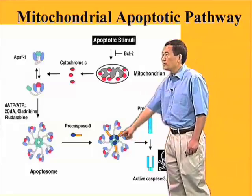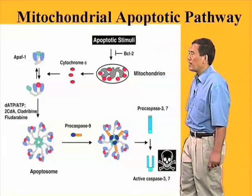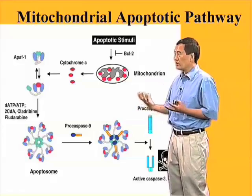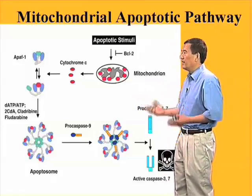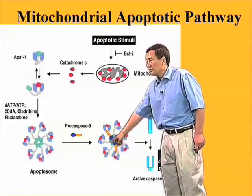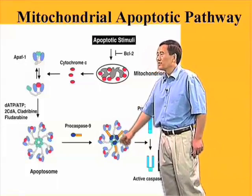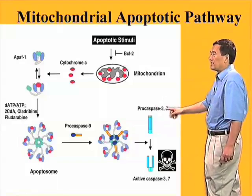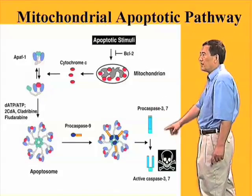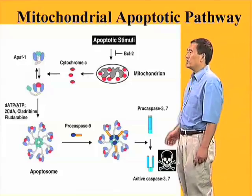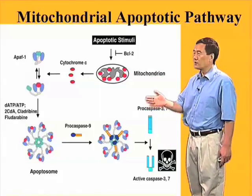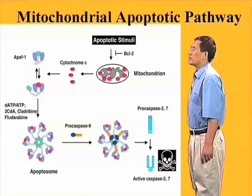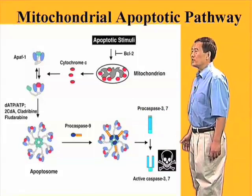Once procaspase-9 gets recruited to the apoptosome, it undergoes an auto-activation process, the molecular detail of which we still do not fully understand. But as a result, the caspase-9, APAF1, cytochrome C complex now has enzymatic activity able to cleave the caspase-3 and caspase-7 precursors, resulting in their activation, which subsequently cleave many important substrates such as DFFA or ICAD, leading to the characteristic changes associated with apoptosis.